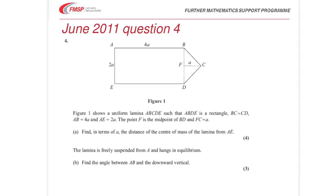The problem is all about a uniform lamina, in other words a flat, thin sheet, as shown in that diagram. And we've got to find the distance, for part A, we've got to find the distance of the centre of mass of the lamina from AE. In other words, the left-hand edge here, AE.